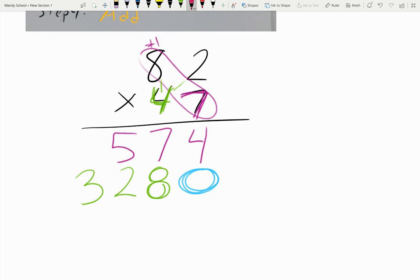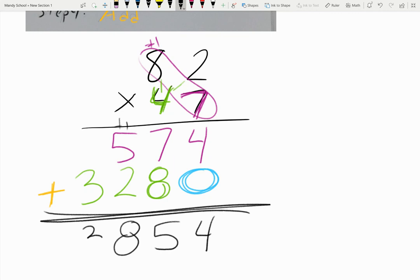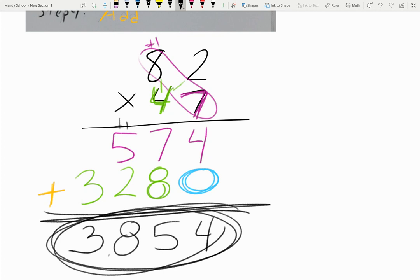And now the very last step I'm going to do is to add these numbers. So as long as you have them in the correct place value, you shall be fine. So the four plus zero, of course, equals four. And the seven plus eight, I know seven plus seven, 14 plus one, 15. So seven plus eight equals 15. So I put down the five, make sure you carry that one. One plus five equals six, six plus two equals eight. And then three plus zero equals three. So in the end, our answer would be 3,854.